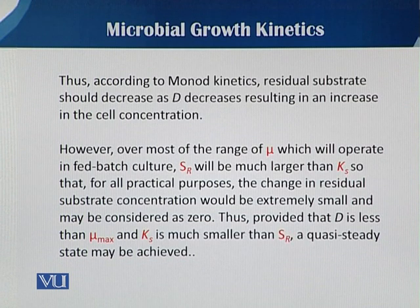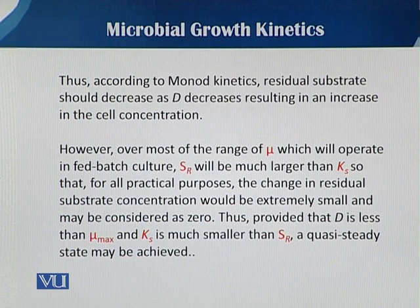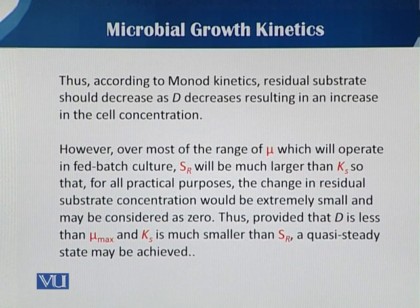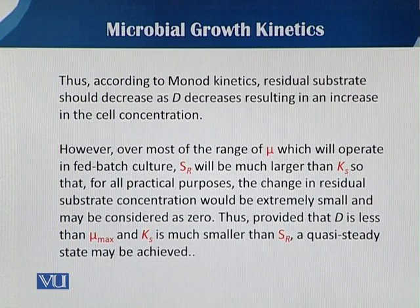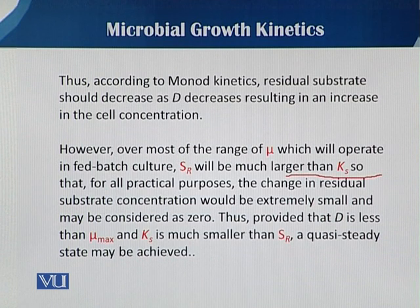If mu remains greater than D, then there will be a higher concentration inside the fermentation vessel. Overall, we can say that the mu operating in fed batch will have S_R much larger than K_S, where K_S is the substrate utilization constant — the Monod parameter.